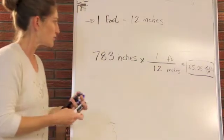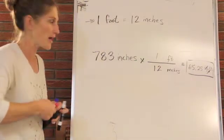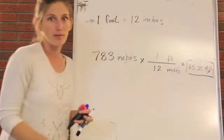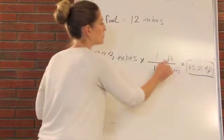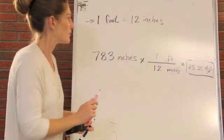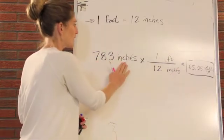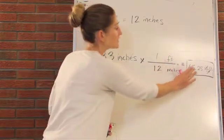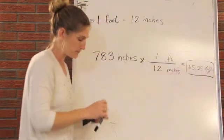Other people like to write this or show how that cancellation happens by crossing the inches off the top and the bottom. And that very quickly shows you that your unit that you've now calculated this to is in feet. So 783 inches is equal to 65.25 feet.